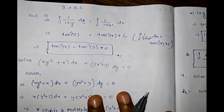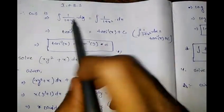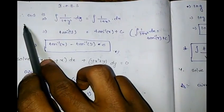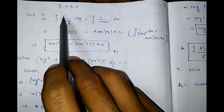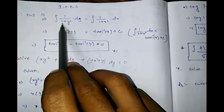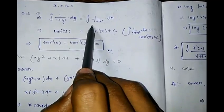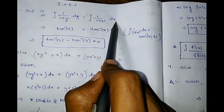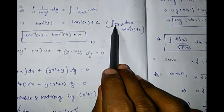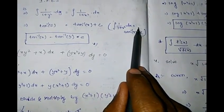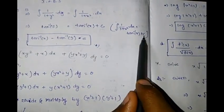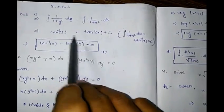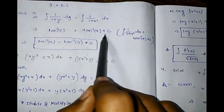Separating variables and integrating on both sides, we have the general solution: ∫1/(1+y²) dy = ∫1/(1+x²) dx. Using the formula ∫1/(1+x²) dx = tan⁻¹x + c.